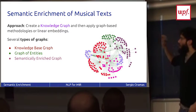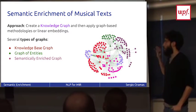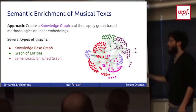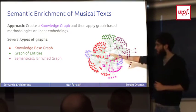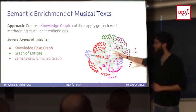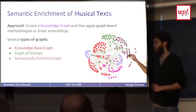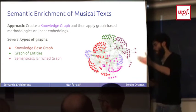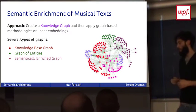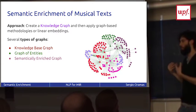So the idea is to create a knowledge graph from a text document, and this knowledge graph is based mainly on entities. And I defined here three different kinds of graphs: the knowledge base graph, the graph of entities, and the semantically enriched graph. So I will explain now the difference between these graphs, and then in the next slides we will see how to apply this to MIR.